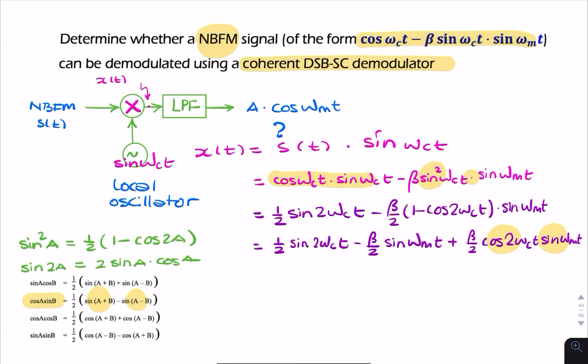So if you think about what happens at the final output here, let's call this y(t). So y(t) will have all the high-pass components, all the high-frequency components, filtered out. So we're only looking at the low-frequency components. This is a high-frequency component. And these are all high-frequency components. This will give me two components, both of which are much higher than ωm. So that will be cut out by the filter, and that will be cut out by the filter. So my final output will be -β/2 sin ωmt.